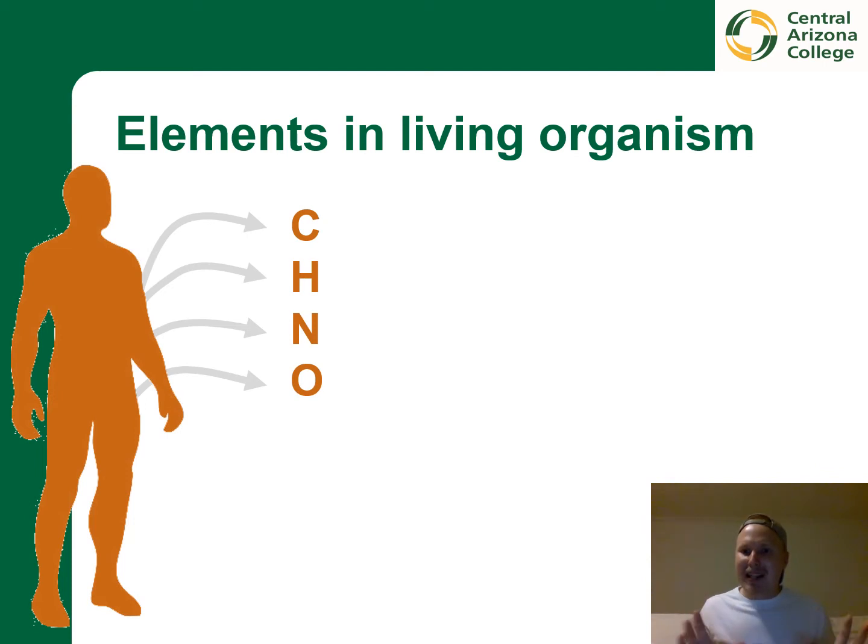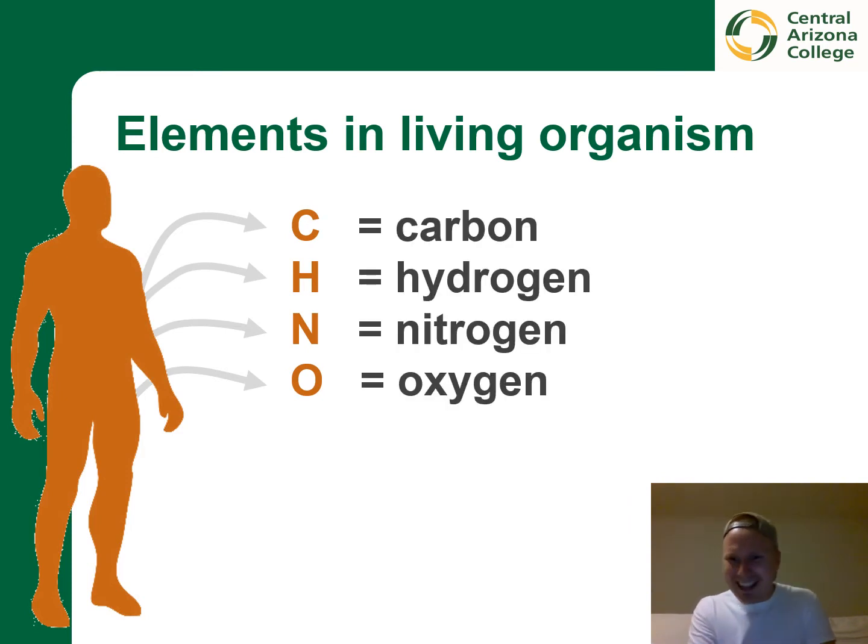I think it is a great place to start by looking at the four most common elements that we find in a living organism. And what we see here is the atomic symbol for each of these. Can we work out what each of these symbols stand for? And I suspect that many of you recognize many, if not all of these. So we have carbon, hydrogen, nitrogen, and oxygen.